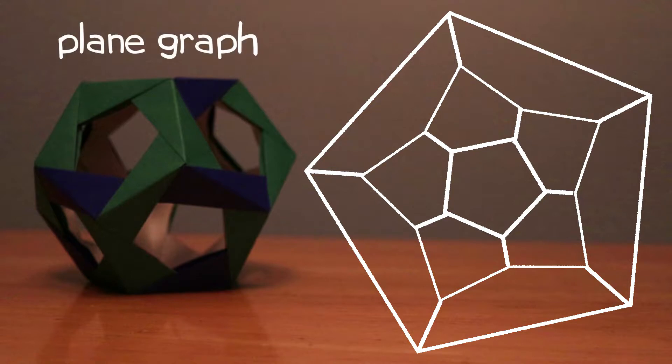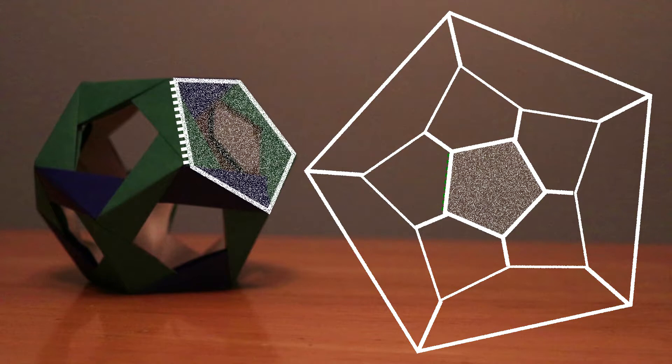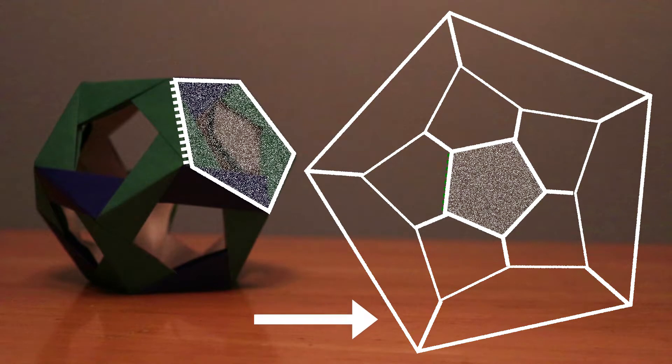But the graph here, called a plane graph, is actually just another way of looking at the same shape. Each line corresponds to an edge on the dodecahedron, and each open area, including the space out here, corresponds to a face.